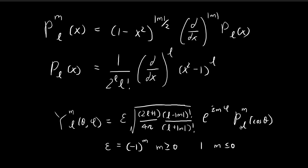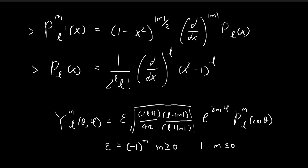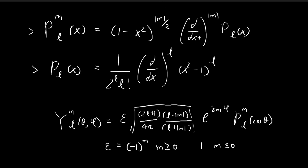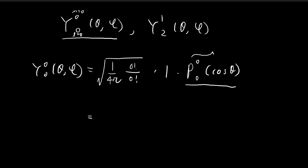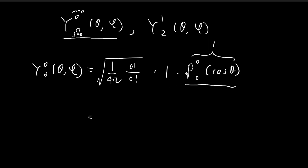For the final term, we deal with the associated Legendre polynomial where l and m are both equal to 0. Substituting back into the expressions for the associated Legendre polynomial, the whole process is trivial because both l and m are 0. Starting with the Legendre polynomial, everything reduces to 1, so the entire associated Legendre polynomial P₀⁰ is just equal to 1.